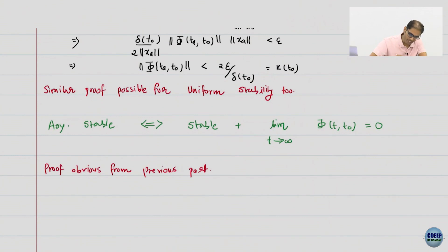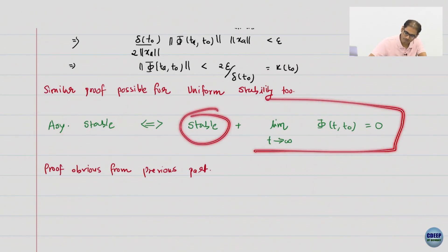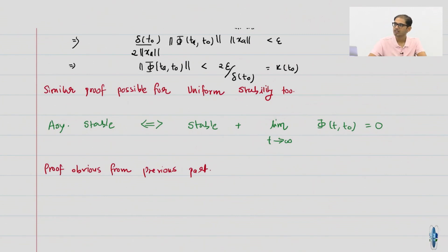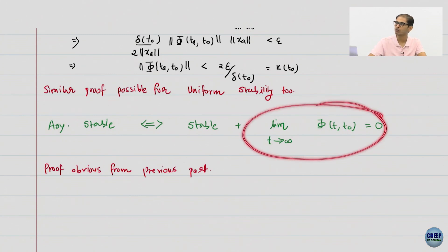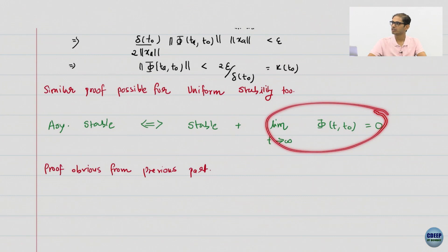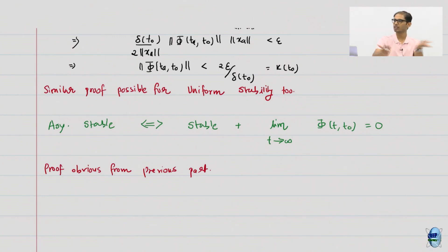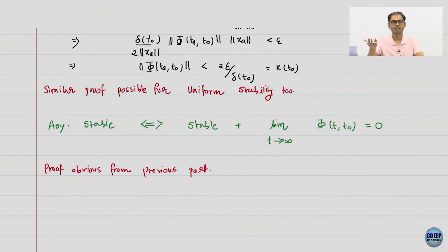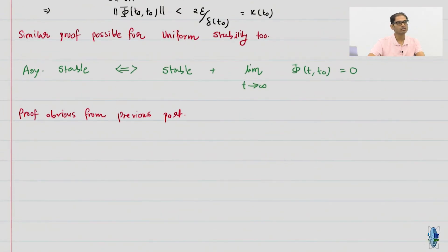For linear systems, asymptotic stability equals stability plus attractivity. Attractivity is evident: if you write the solution, as time increases the state transition matrix goes to zero, so whatever the initial condition, solutions converge to zero — this is global attractivity. Since the state transition matrix goes to zero, the initial condition is just a scaling constant, and everything converges to zero.